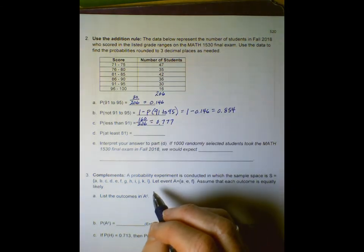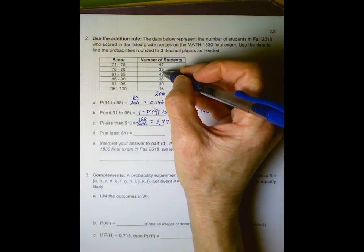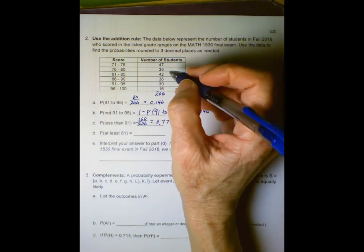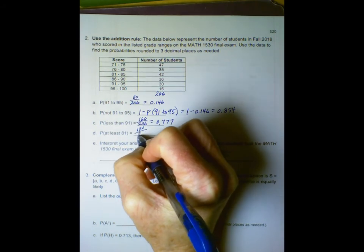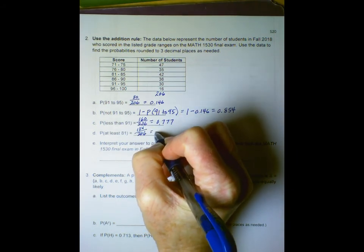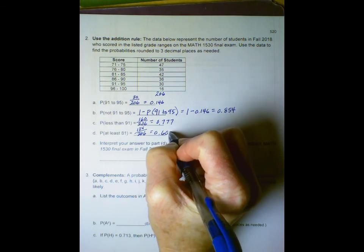So we want the sum of the last four classes, and that would be 124 out of 206, or 0.602.